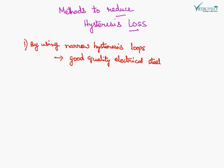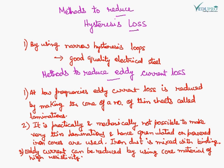Hysteresis loss can be reduced by using narrow hysteresis loops. It can be done by using good quality electrical steels. Methods to reduce eddy current loss: at low frequencies eddy current loss is reduced by making the core of a number of thin sheets called laminations. It is practically and mechanically not possible to make very thin laminations, and hence granulated or powdered iron cores are used. Iron dust is mixed with the binding. Eddy current can be further reduced by using core material of high resistivity.